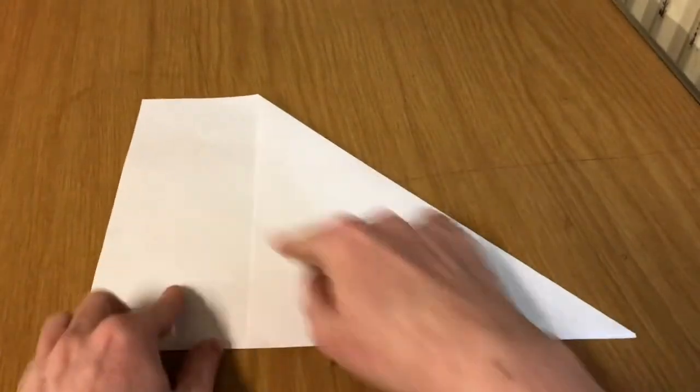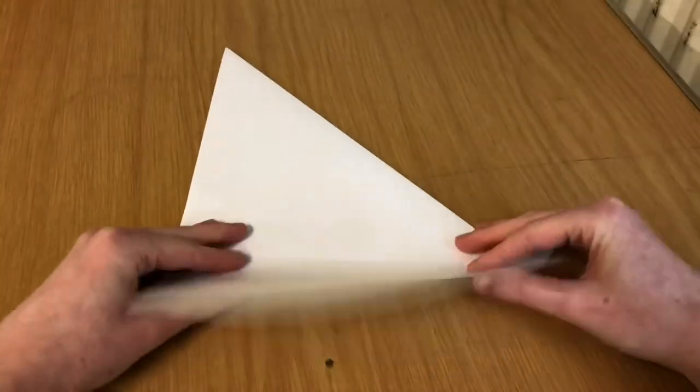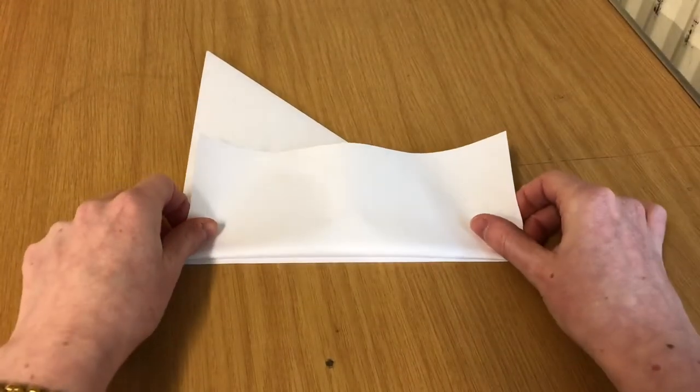You don't want to fold it corner to corner. You want to just bring it over to the edge so you've got a triangle and then a rectangle at the side. Turn it over and then fold the rectangle back in on itself.